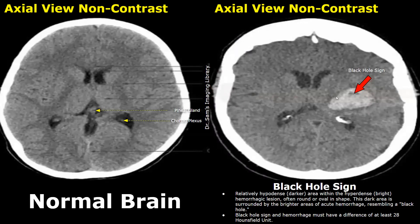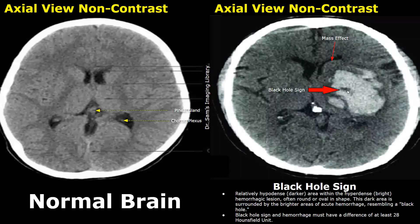This is another image showing the black hole sign — we can see a well-defined hypodense area within a hyperdense hemorrhage. Here is another image showing the black hole sign with some well-defined hypodense areas within the hyperdense hemorrhage. The hypodense areas are surrounded by the hyperdense hemorrhage, which is why it is termed the black hole sign.